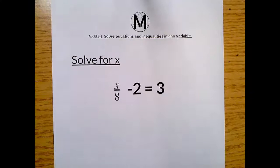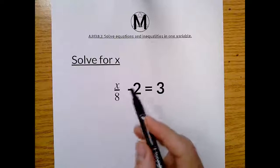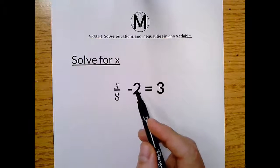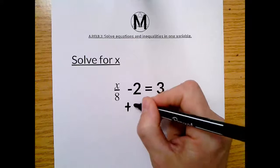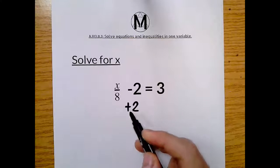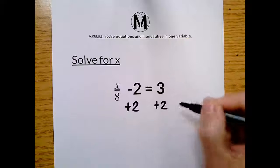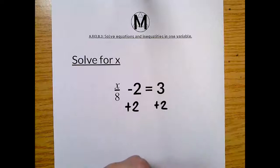The way we do that is we just do the opposite operation to make this go away. So the opposite of negative 2 is plus 2. If I do it to one side, you must balance out and do it to the other side, right? To the other side of the equal sign.